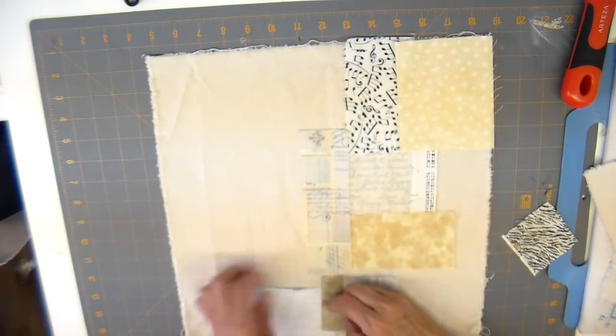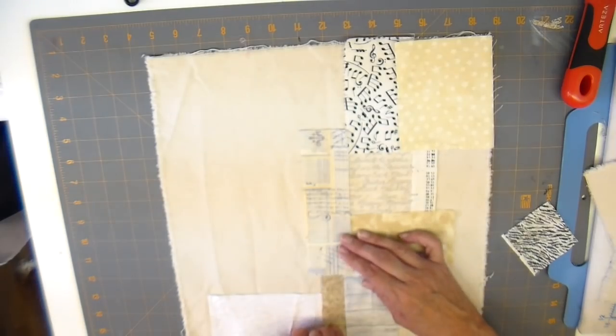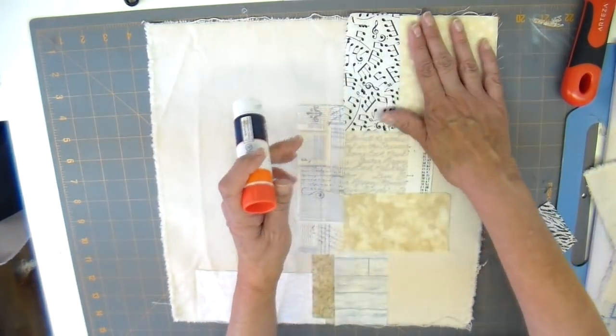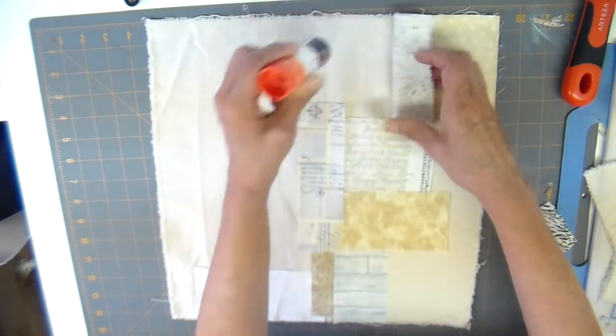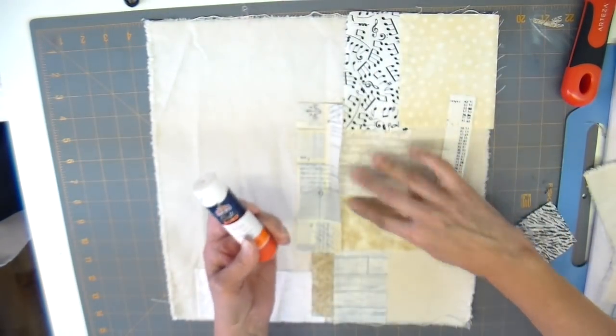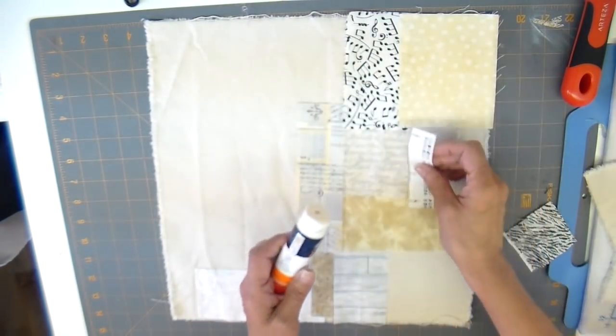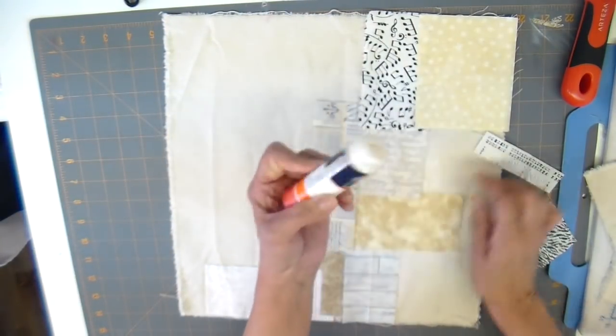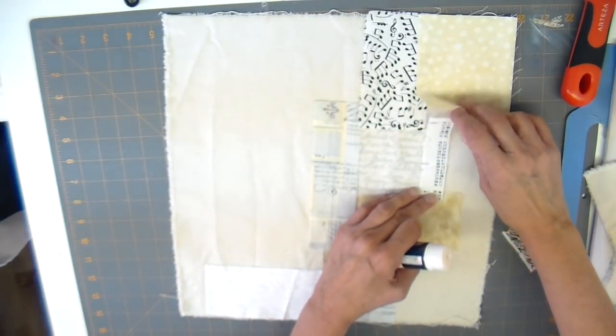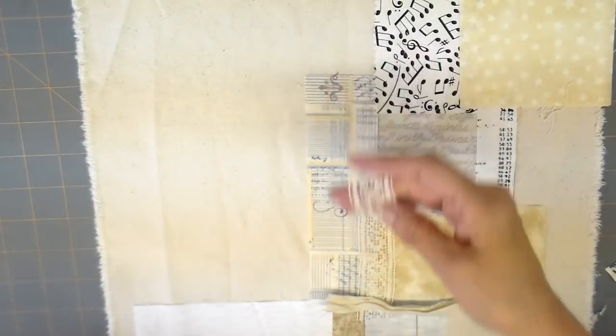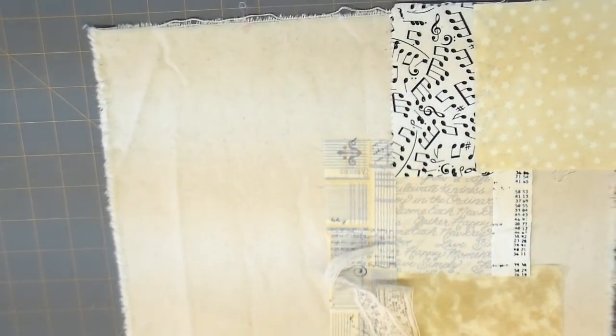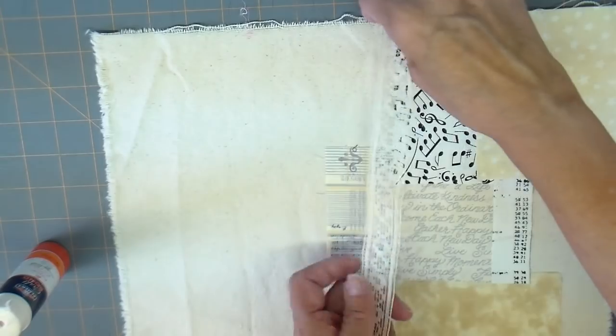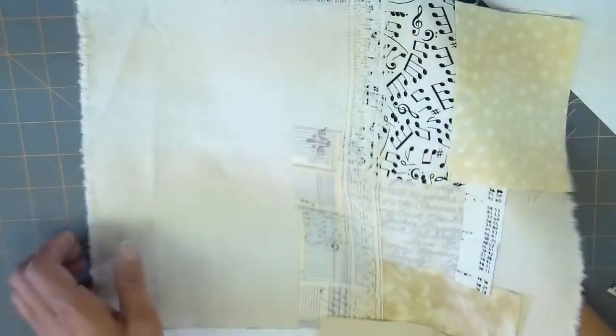Again, just laying these out and then I'm taking my glue stick and I'm just gluing these into place. Once the glue stick is completely dry, you can take it to your sewing machine and sew without worrying about it gumming up your sewing machine. I'm also adding some lace onto this and I added a little piece of trim as well.